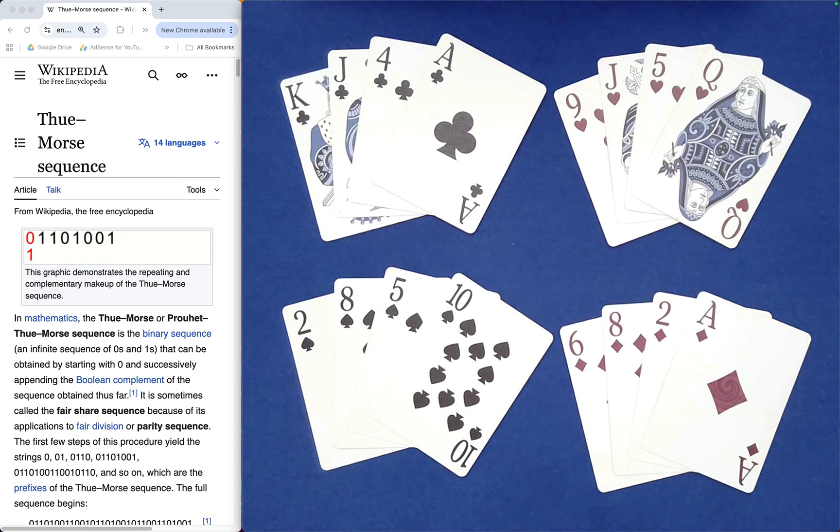It's called the Thue-Morse Sequence, and it is also referred to as the Fair Share Sequence, in the sense of having a list of items that two individuals can choose from. So, what is the fairest way for them to take turns making their selections? Well, that's what the Thue-Morse Sequence is.